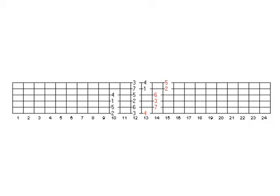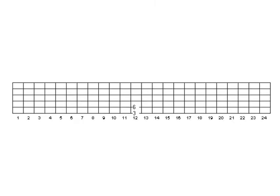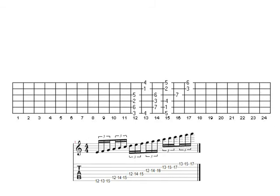Once you've learned one three-note-per-string pattern, when you move on to the next one all you have to learn is just one strip of six notes, or three two-note shapes, on the E and A, D and G, and B and high E strings. Three-note-per-string pattern three starts on the third of the scale — in this case E, twelfth fret. We start with a perfect fourth, augmented fourth, perfect fourth, perfect fourth, another perfect fourth, augmented fourth, and the rest are all perfect fourth shapes. Here's the scale degree information and the note names.